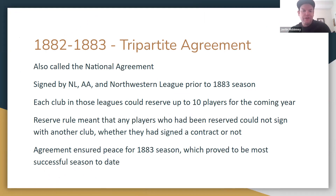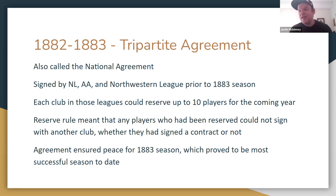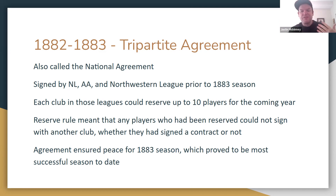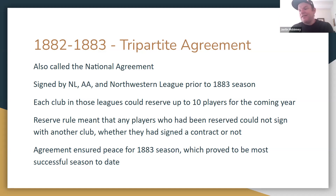To understand why the Union Association came to be, it's helpful to look back a couple of years. The American Association, formed in 1882, was a rival to the National League, which had formed in 1876. The 1882 season saw relatively little warfare between the two leagues, but in the off-season it exploded with a lot of contract jumping, contract offers, and teams signing players to competing contracts, creating a lot of uncertainty about rosters.